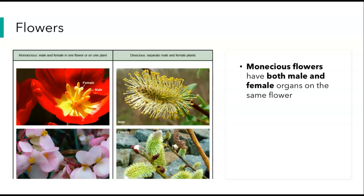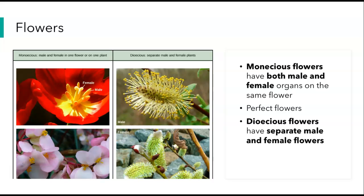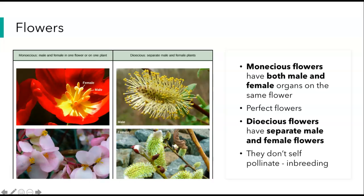Let's talk about two different types of flowers. Monoecious flowers have both the male and the female parts on the same flower — they're called perfect flowers. Dioecious flowers have separate male and female flowers. Remember, dioecious is like having a separate male and a female, and monoecious is when you have both parts, like hermaphroditic. Even though there are male and female parts on the same flower in monoecious flowers, there are ways in which they prevent themselves from self-pollinating, which would be inbreeding — a number of different mechanisms we won't necessarily get into.